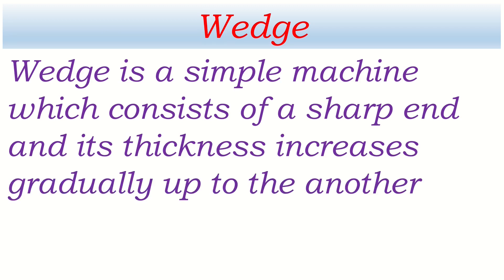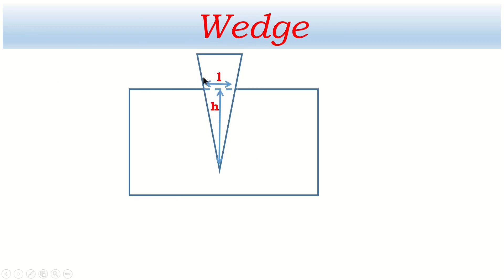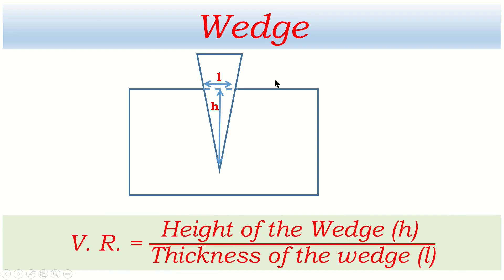Next is the wedge. A wedge is a simple machine which consists of a sharp end whose thickness increases gradually up to the other end. In the diagram, the wedge is shown inserted into an object. The height of the wedge inserted into the object and the thickness of the wedge inserted into the object are the key measurements. The velocity ratio of the wedge is the ratio of the height of the wedge inserted into the object to the thickness of the wedge inserted into the object.